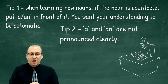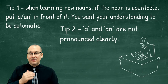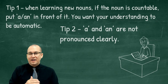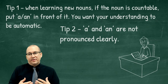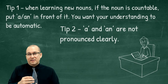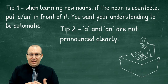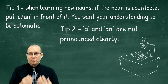Tip two: 'a' and 'an' are not pronounced clearly. I don't say 'a cat' with stress — I say 'a cat.' I don't say 'an eraser' with stress — I say 'an eraser.' That's why they're a little bit difficult to notice when you're listening, because native speakers don't stress them. When you're pronouncing them too, just say 'a cat,' 'an eraser' — don't stress them.